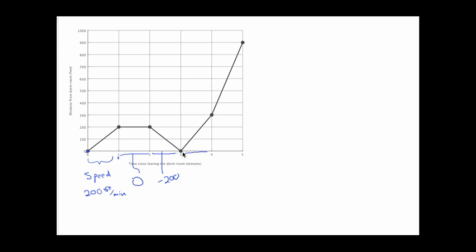From three to four, it's one minute and a change of 300 feet, so that's 300 feet per minute. And then finally, it's moving really fast here. In one minute he went from 300 feet to 900 feet. That's a total change of 600 feet in one minute, so the speed is 600 feet per minute.